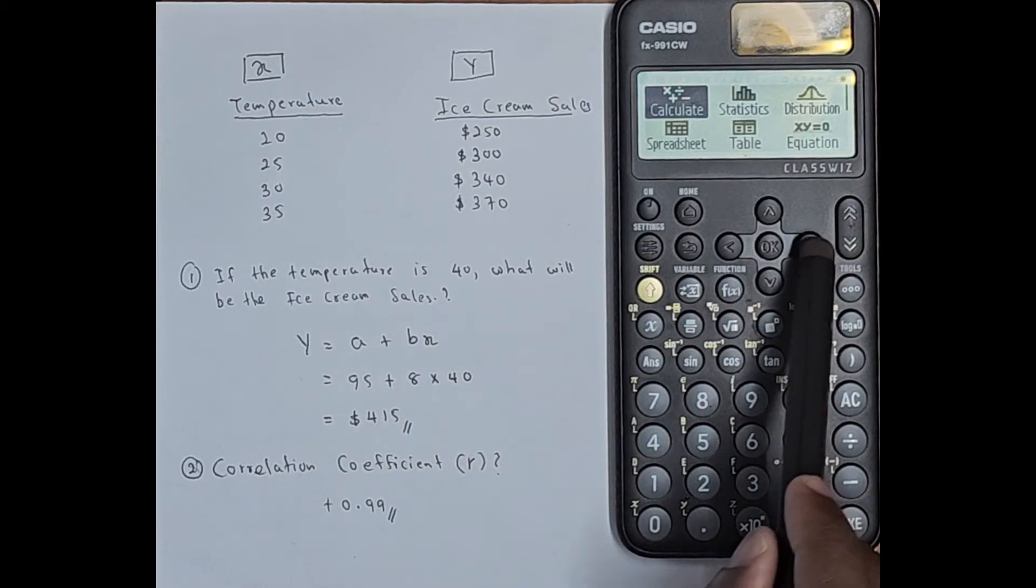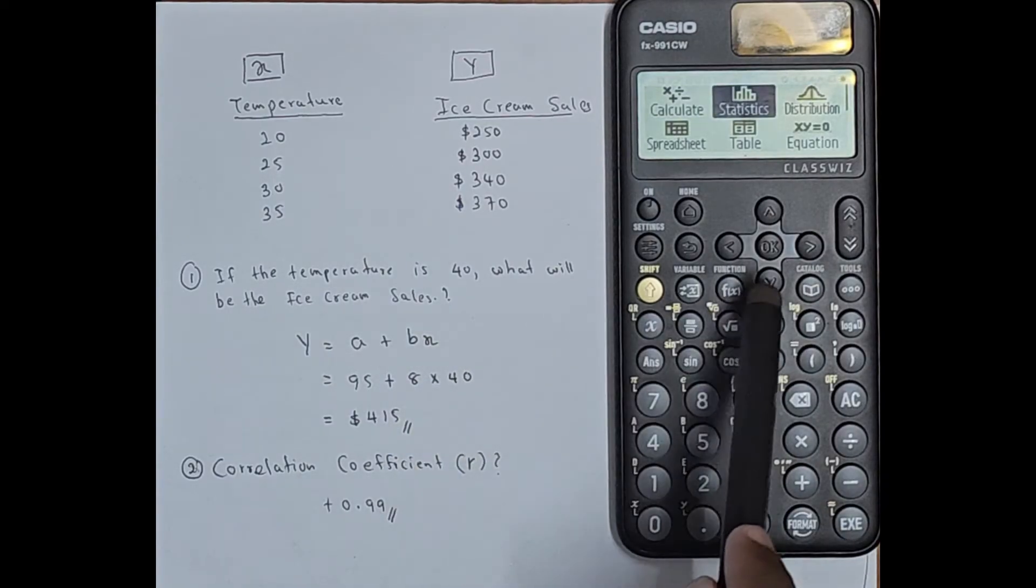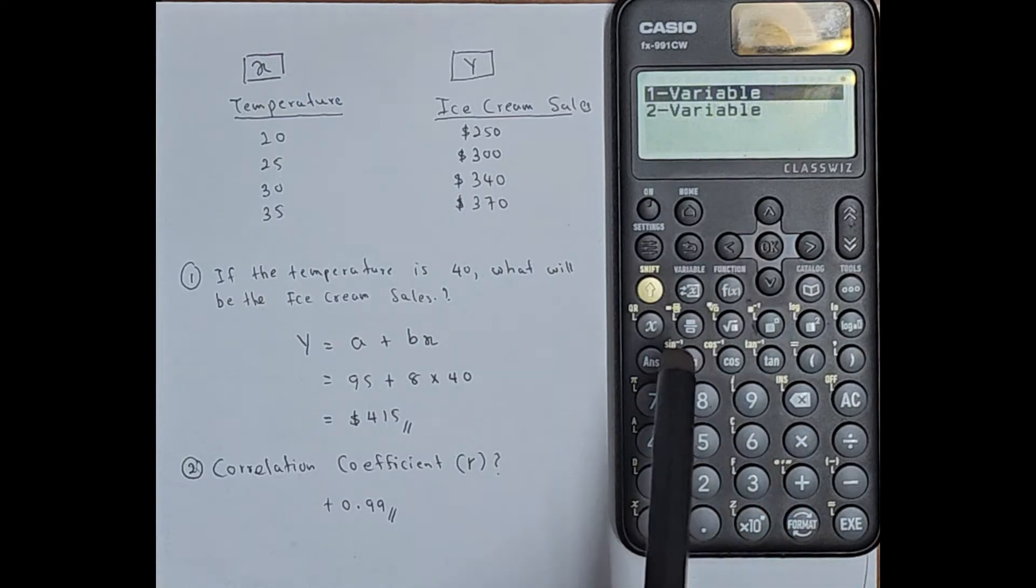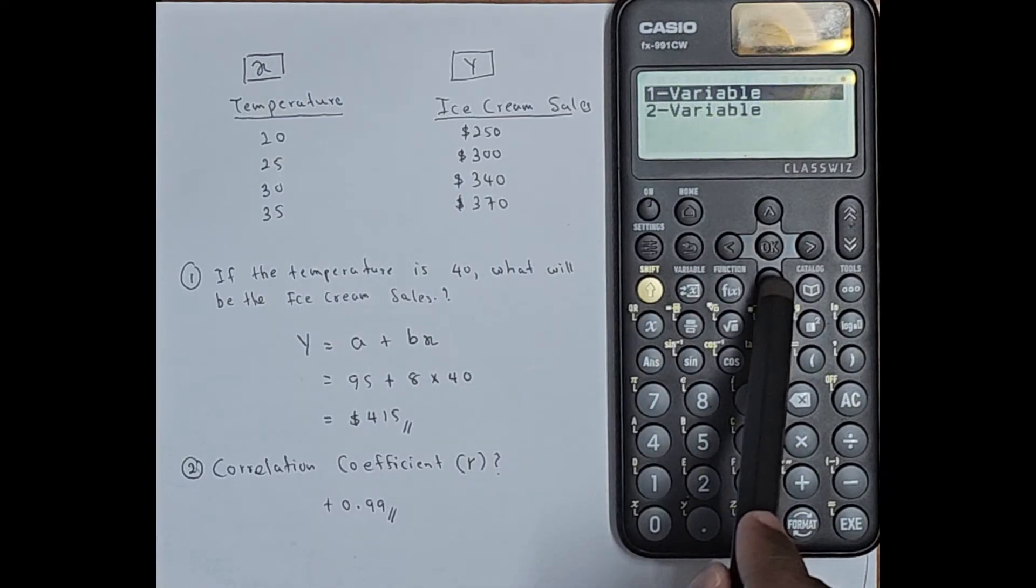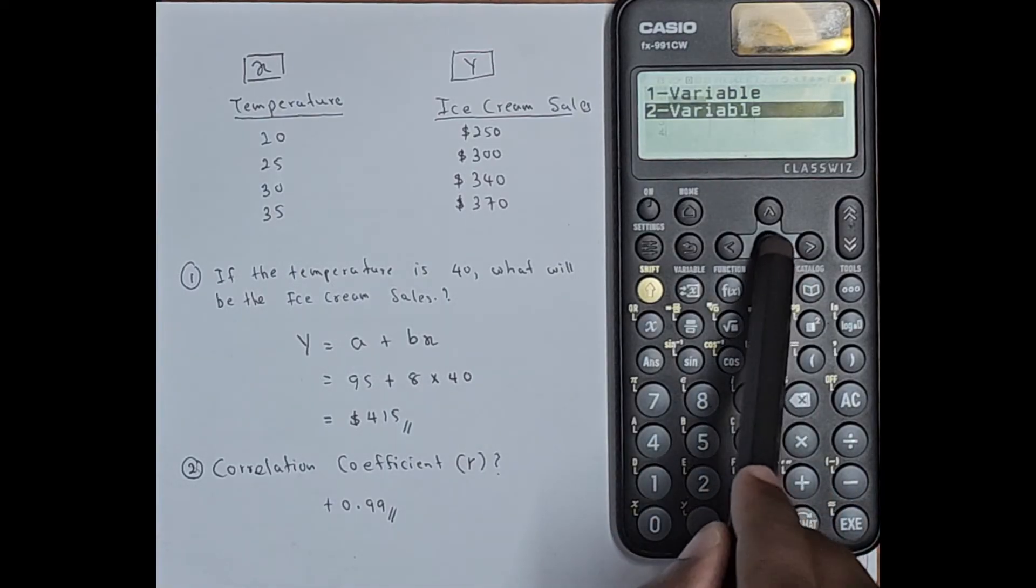Next what you have to do: go to statistics. From the arrows you can go to the statistics. Now click ok. Next, select two variables. From the arrow you can come down, then go to two variable, then click ok.